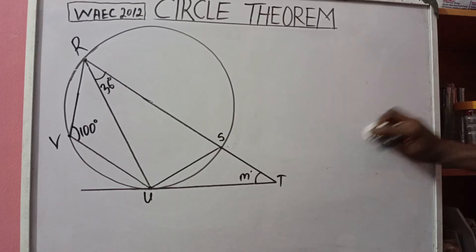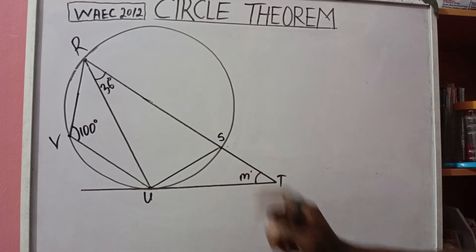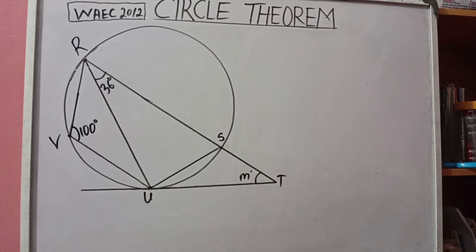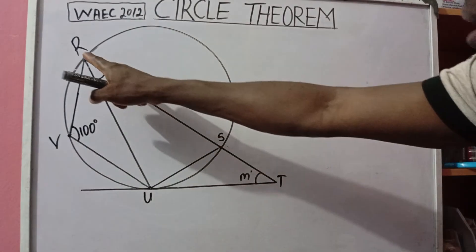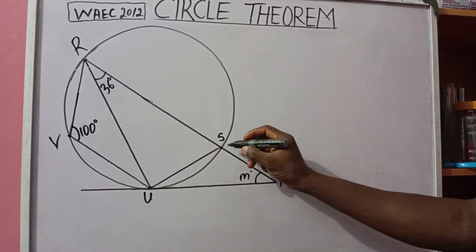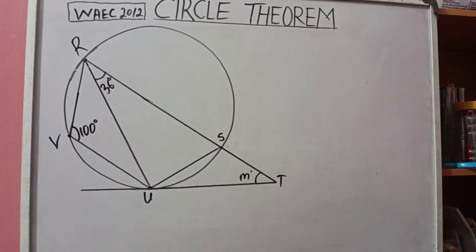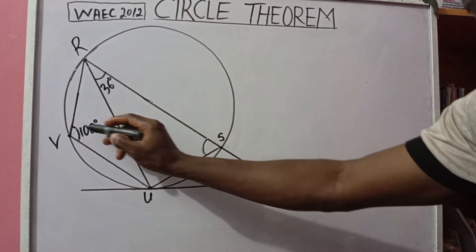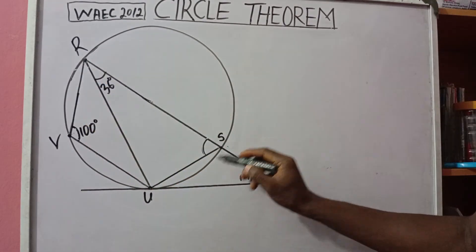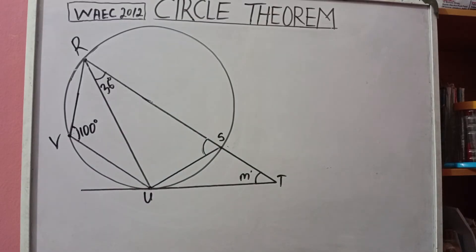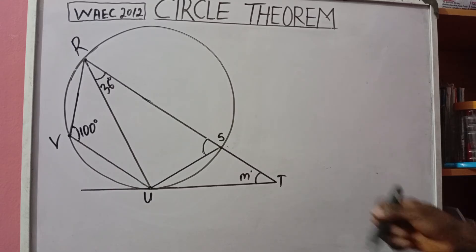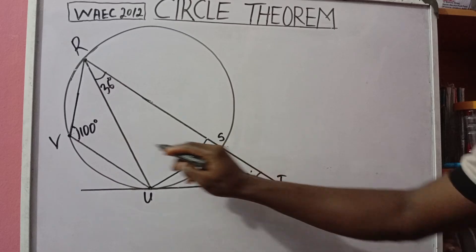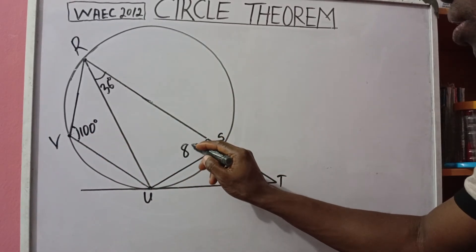Now let's get started finding angle M. Looking at the diagram, we can identify a cyclic quadrilateral with vertices R, V, U, and S. Since angle RVU is 100 degrees, its opposite angle in the cyclic quadrilateral must add up to 180 degrees. So the opposite angle is 180 minus 100, which gives us 80 degrees.